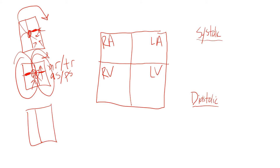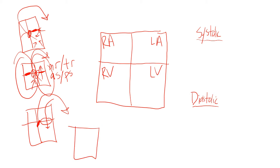For diastolic murmurs, the same principle applies. In diastole, the heart is filling. The mitral valve must be open — blood flows from the left atrium into the left ventricle — and the aortic valve must be closed. If the aortic valve were open, blood would go out to systemic circulation instead of filling the heart.